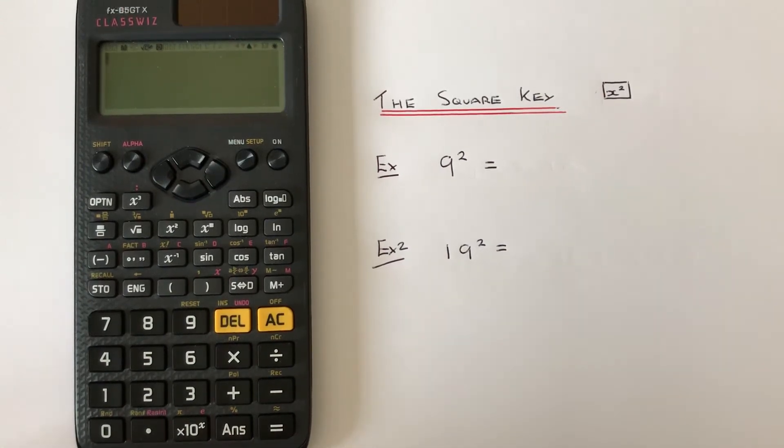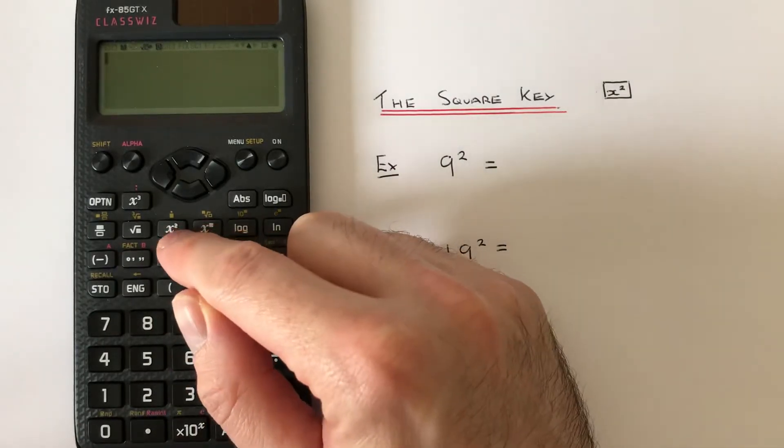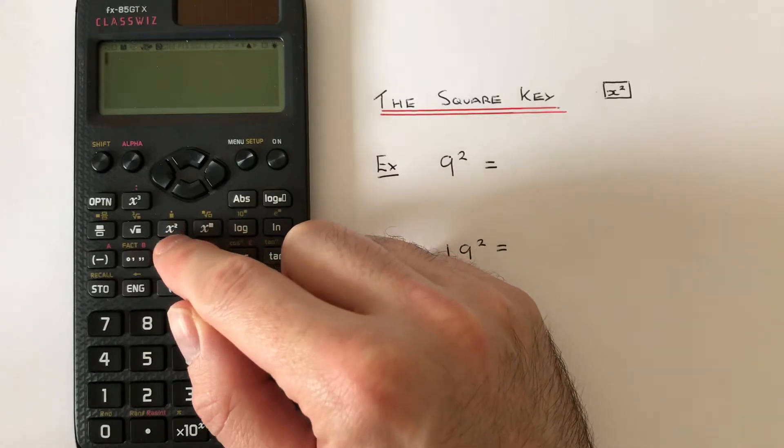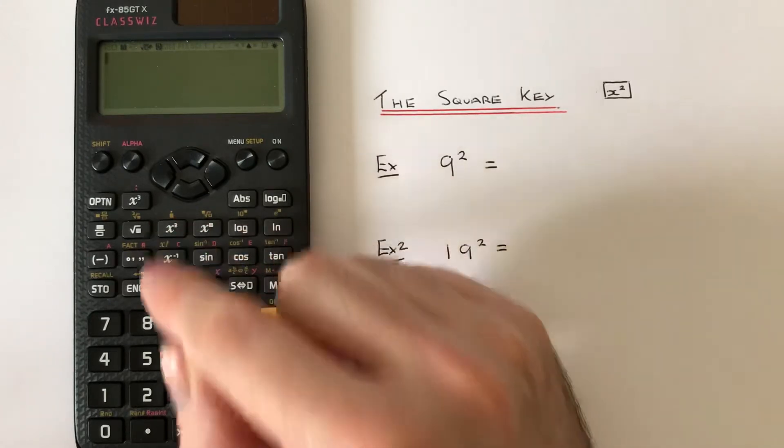Hi guys, welcome back. This is Maths 3000. Today I'm going to show you how to use the square key to square numbers on a Casio ClassWiz calculator. To begin with, you need to know where the square key is. It's located on the second row of the scientific functions, and it's this x squared button here.